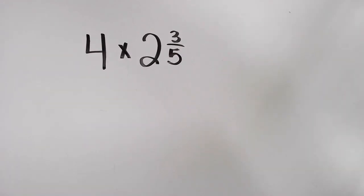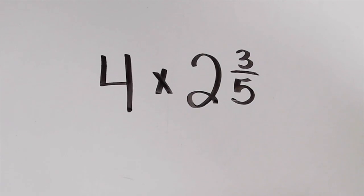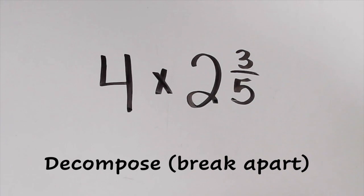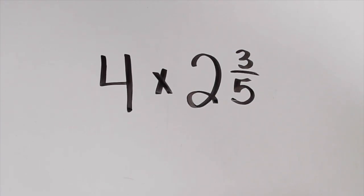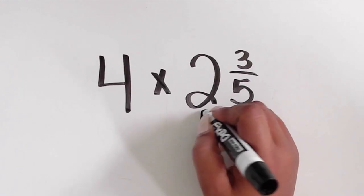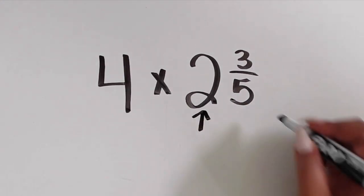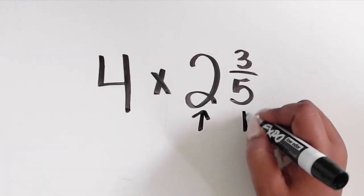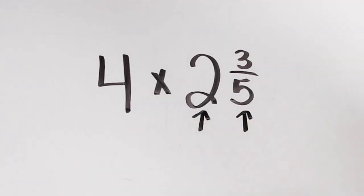We can take that same idea and apply it to multiplying a mixed number by a whole number. If we have the expression 4 times 2 and 3 fifths, we can decompose or break apart that mixed number into a whole number plus a fraction. 2 is the whole number and 3 fifths is the fraction.